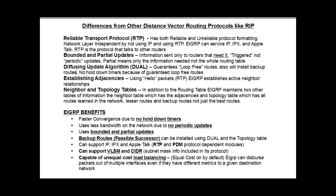Another thing that is different about EIGRP from RIP is that it uses bounded and partial updates. That means EIGRP will send information only to the routers that need it, and it's only going to send the information that they need. It's not going to send out its whole routing table like RIP does every 30 seconds.